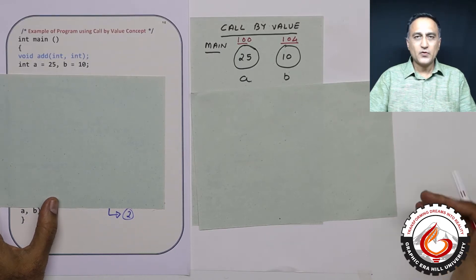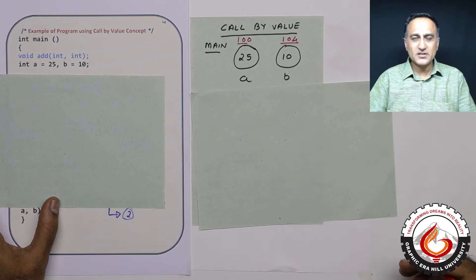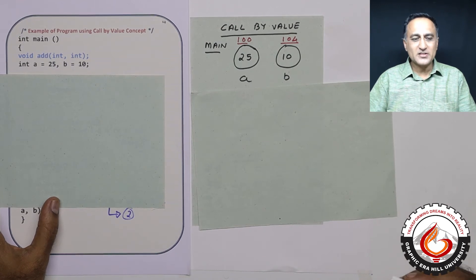In C programming, when we use or create user-defined functions, we pass parameters or values to user-defined functions using two mechanisms.